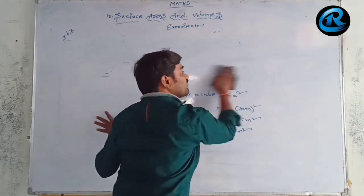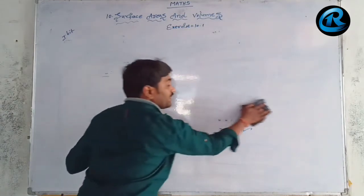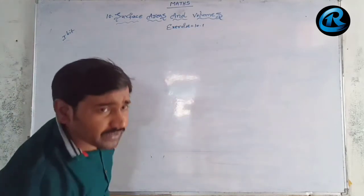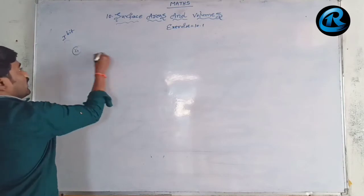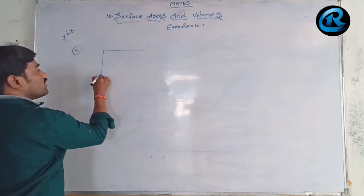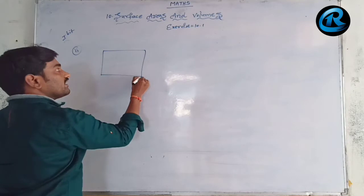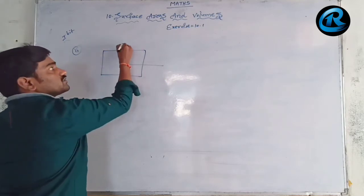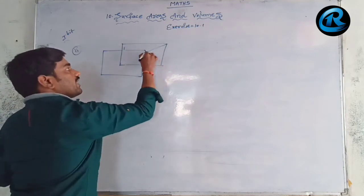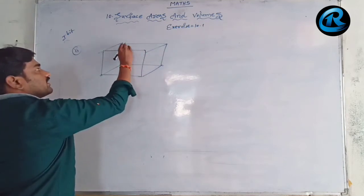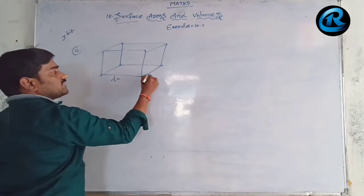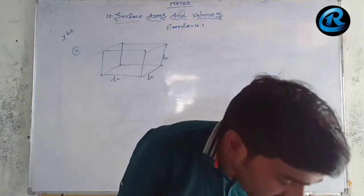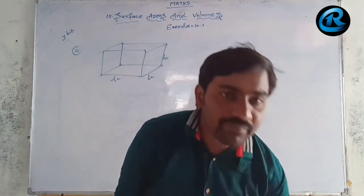In the next problem we have a rectangular prism, which is nothing but a cuboid. A cuboid is made up of rectangles. Here the cuboid has length = 8 cm, breadth = 6 cm, and height = 5 cm. Let us find out the lateral surface area.